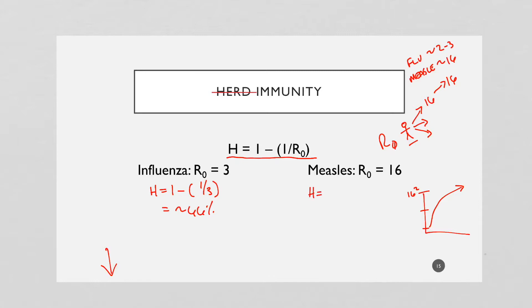Measles, on the other hand, is 1 minus 1 over 16. Right off the bat, based on the denominators, you can see that 16 is much bigger than 3, so the fraction itself is smaller. It comes out to around 93% or so. That means because it is so infectious, because of the R0 being so high, you need about 93% of the population to be immune, immunized, vaccinated against measles to prevent outbreaks.